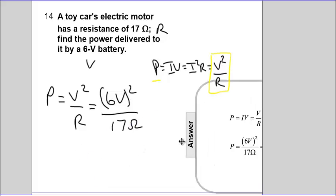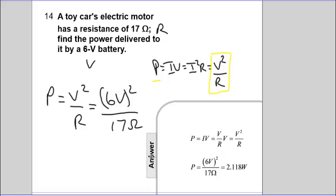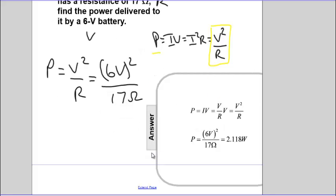Let's reveal the answer. We end up with 2.118 watts. That means about 2 joules of energy are converted every second. Not a lot of energy, really.